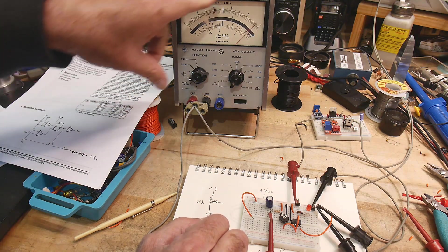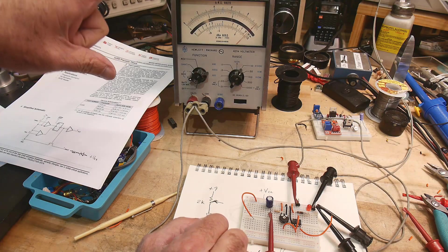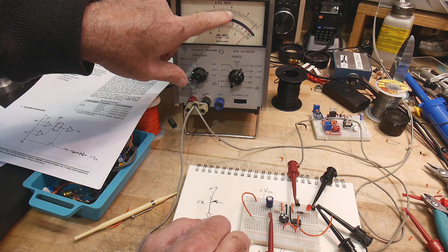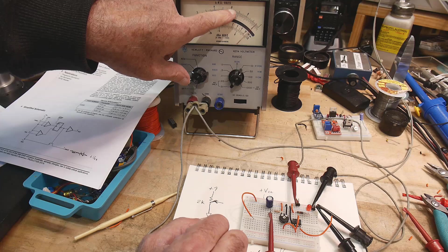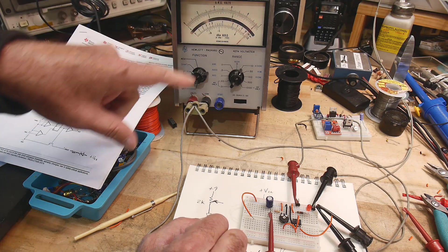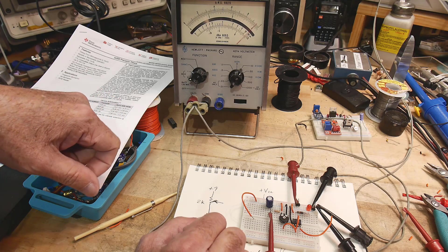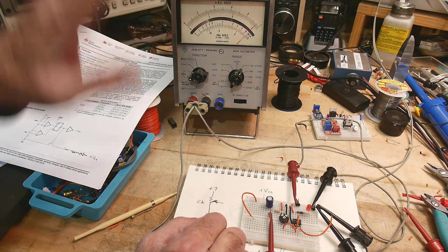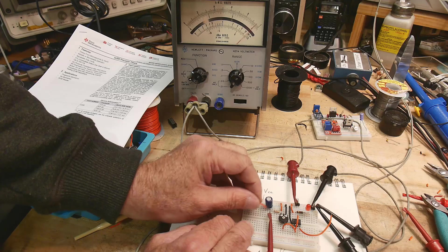So we're charging. So it takes a while for it to charge up to 9 volts, but it will get there. It should get to 63% of the way in 2.2 seconds, so it should be able to get to about 6 volts in 2.2 seconds. Let's see if that's true.